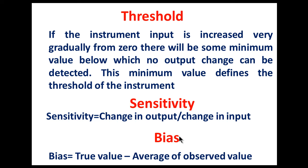Next is bias. Bias is the difference between the true value and the average of the observed values. For example, if we measure a dimension of exactly 1 meter using a micrometer or vernier caliper, and our readings are 0.8, 0.2, 0.4, 0.9, whatever the average of those observed values is, the difference from 1 meter is the bias.